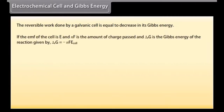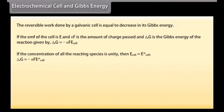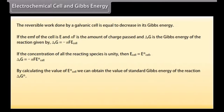Electrochemical cell and Gibbs energy. The reversible work done by a galvanic cell is equal to the decrease in its Gibbs energy. If the EMF of the cell is E, NF is the amount of charge passed, and ΔrG is the Gibbs energy of the reaction, then: ΔrG = −NF × E(cell). If the concentration of all reacting species is unity, then E(cell) = E°(cell) and ΔrG = −NF × E°(cell). By calculating the value of E°(cell), we can obtain the value of the standard Gibbs energy of the reaction, ΔrG°.